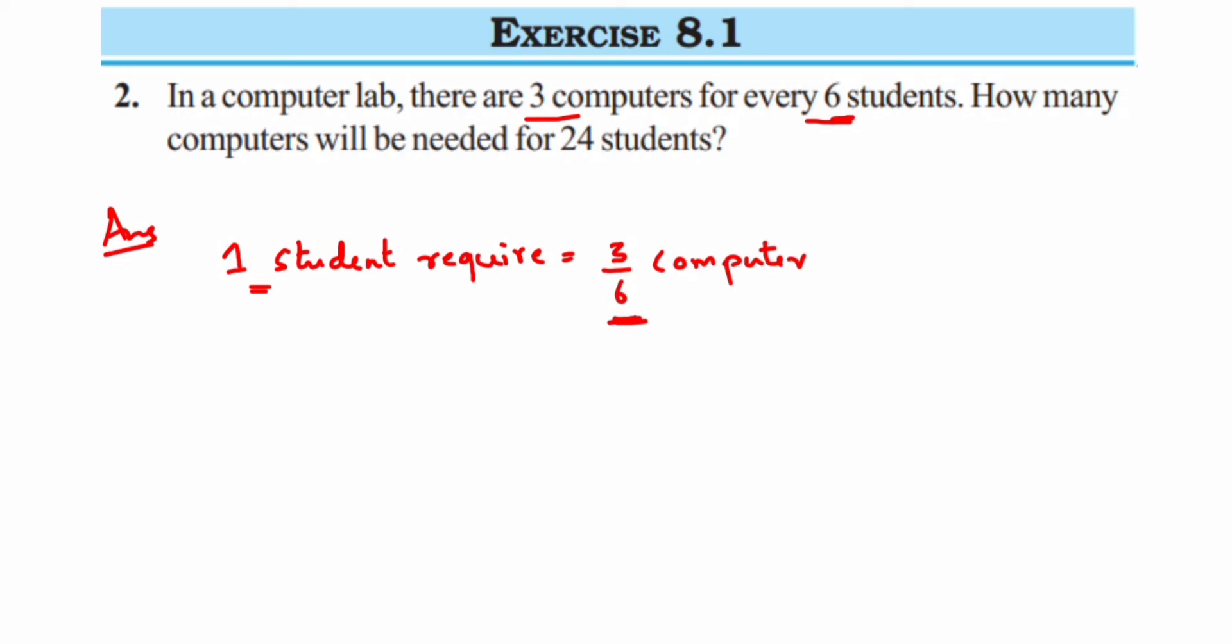Now for one student I got that, so I'm going to calculate the same thing for 24 students. Therefore, 24 students will require - for one we got 3 upon 6, for 24 it's very simple: 24 multiplied by 3 upon 6.